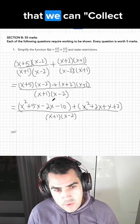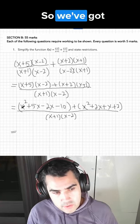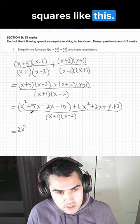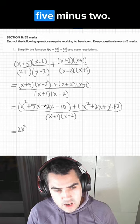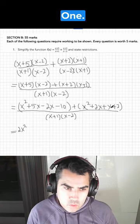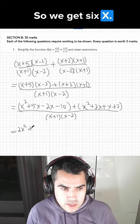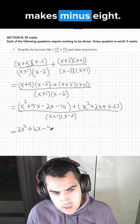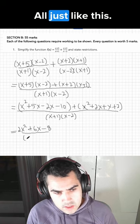But here we see that we can collect like terms. So we've got 2 x squareds. We can get 5 minus 2 plus 2 plus 1, so we get 6x, just like that. And we get minus 10 plus 2, that makes minus 8. All just like this.